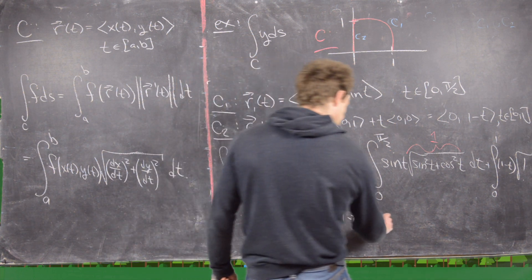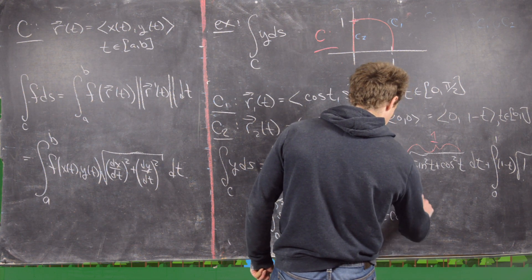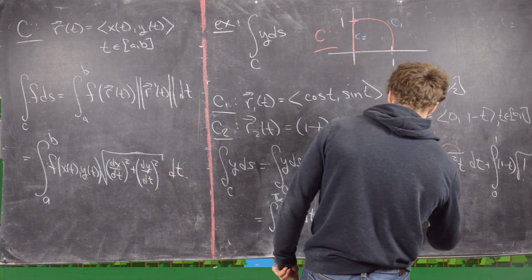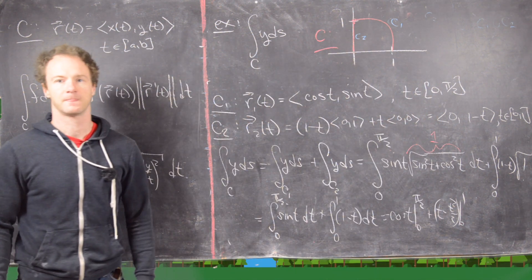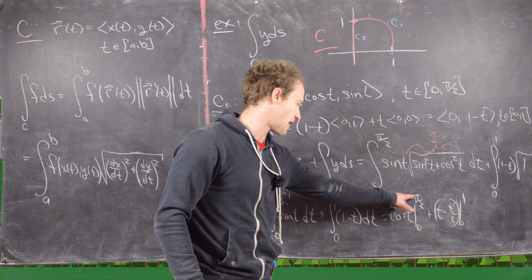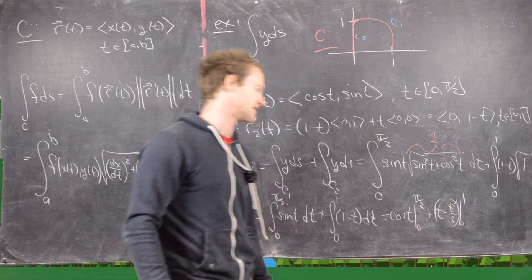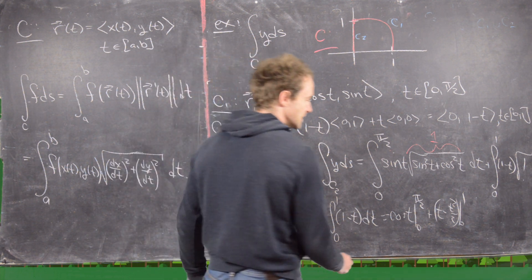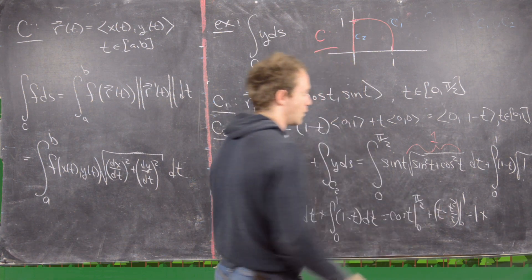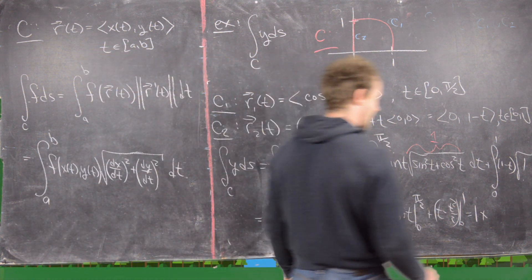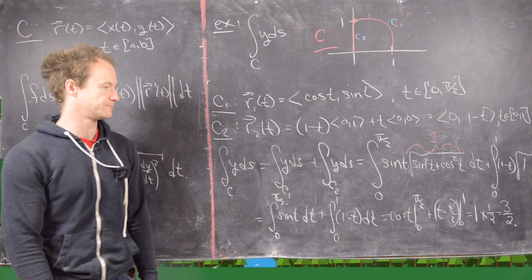Taking the antiderivative: [−cos t] from 0 to π/2, plus [t − t²/2] from 0 to 1. Plugging in π/2 gives 0, plugging in 0 gives 1, and since 0 is the lower bound with a minus sign, that cancels to give 1. For the second part, plugging in 1 gives 1 − 1/2 = 1/2. So the final answer is 1 + 1/2 = 3/2.